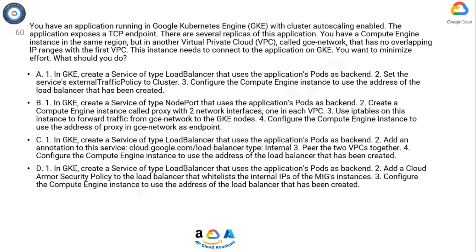Option D: In GKE, create a service of type LoadBalancer that uses the application's pods as backend. Add a Cloud Armor security policy to the load balancer that whitelists the internal IPs of the MIG's instances. Configure the Compute Engine instance to use the address of the load balancer that has been created. Now take 10 seconds to think about the answer.